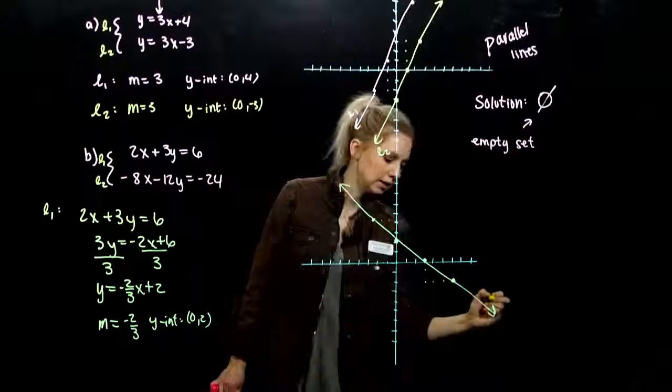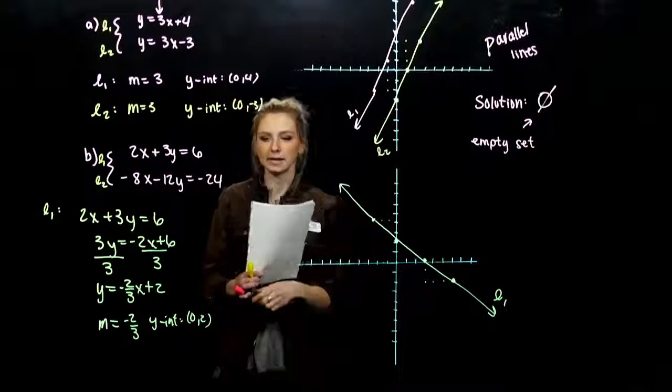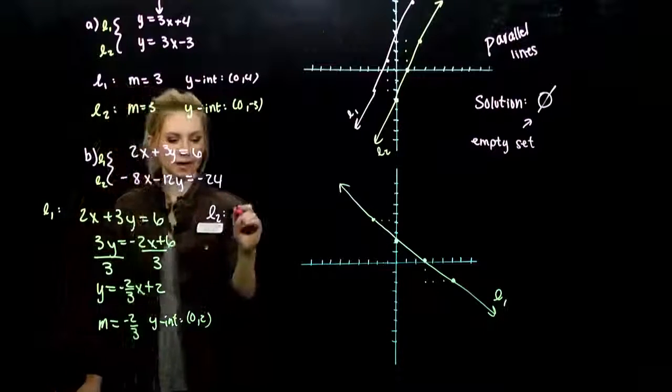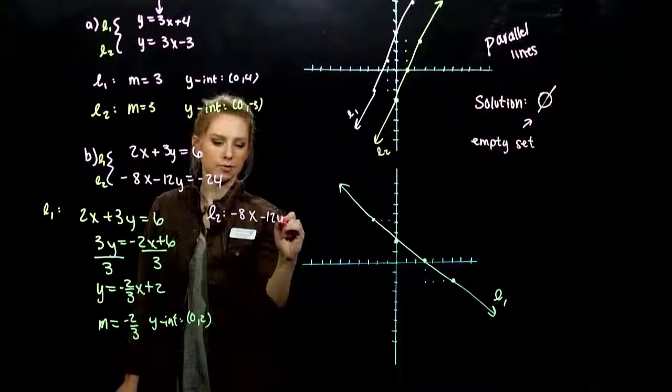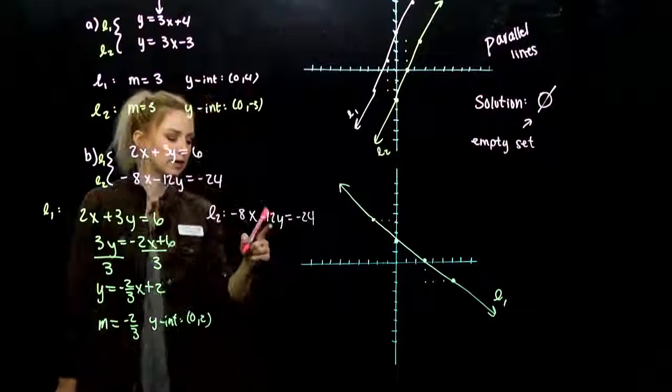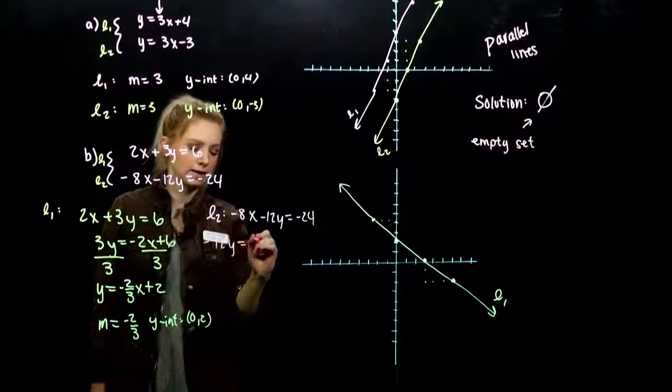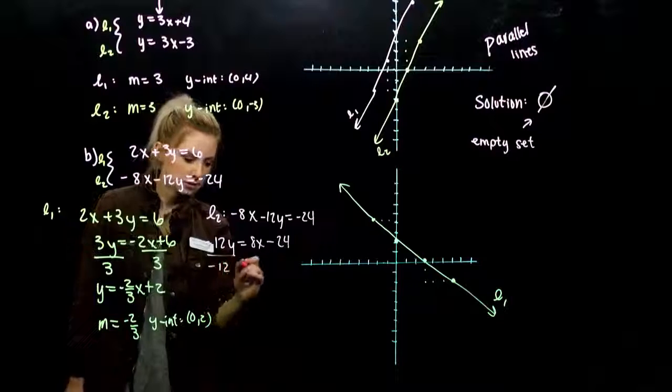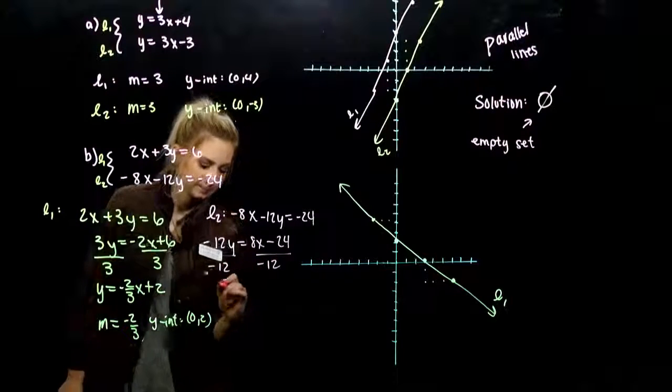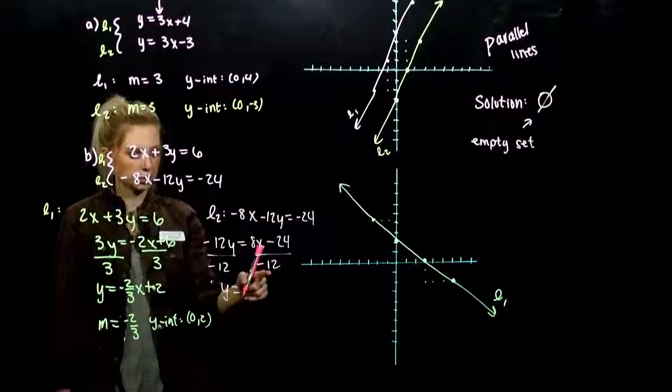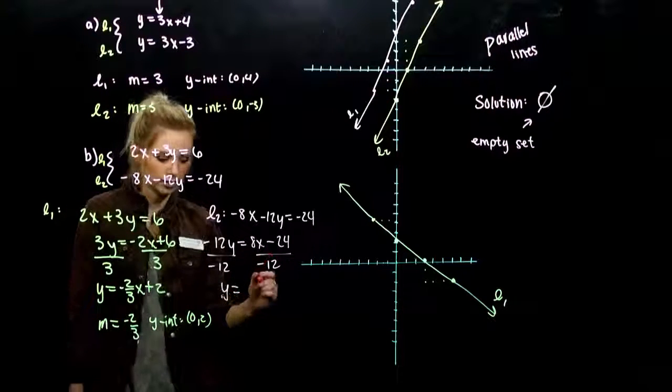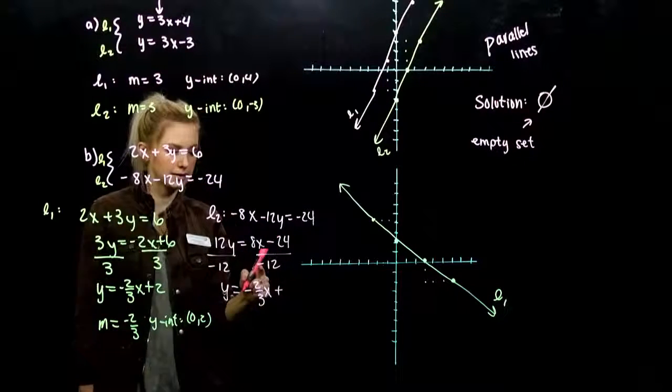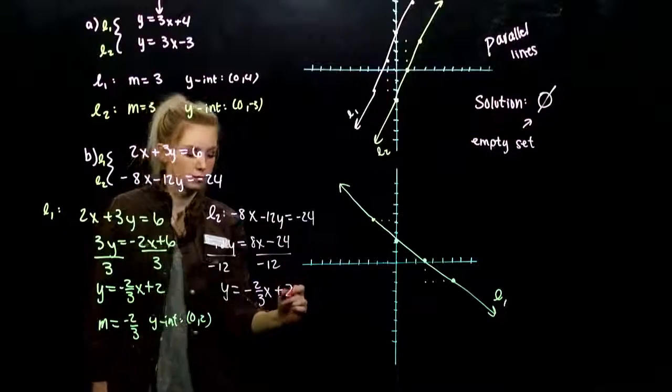So that was line 1. Now let's go ahead and solve for y in the second line. So negative 8x minus 12y is negative 24. I want this one on its own, so I'm going to add 8x to both sides. We want to divide by minus 12. So y is, what does 8 divided by 12 simplify to? We could take 4 out of both.